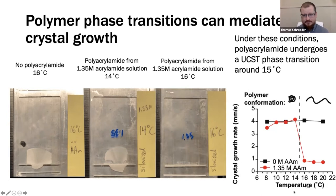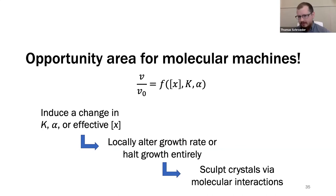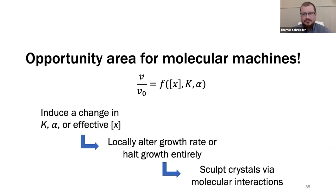I believe this is an opportunity area for molecular machines. I've used polymers as the relevant species because I find critical phase behavior phenomena convenient to work with and well-suited to my hydrogel system, which is itself composed of polymer backbones. But there's no reason why in principle other additives might not be used — things like photoswitches, which were the subject of a recent talk in this group, might be relevant here as well. Any sort of molecular transformations are fair game for doing this kind of thing, so long as you can successfully couple them to crystal growth rates.